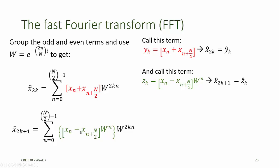Next, we call the term in red here y sub k, and the term in green in the second summation we call z sub k times w n, using the w that we already defined earlier.